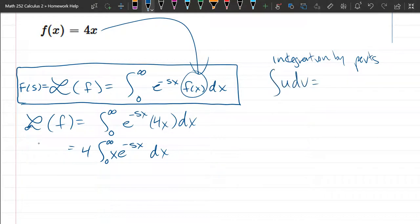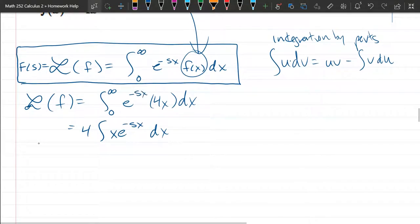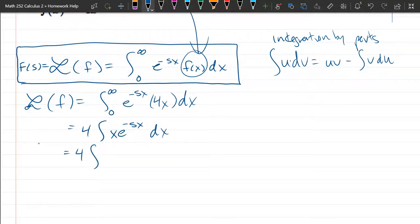So we have integral u times dv equals u times v minus integral v du. This is how we're going to do it. I'm going to throw out the endpoints until we're at the very last step where we're ready to plug them in. So I have to choose. When you make this choice, you want u to have